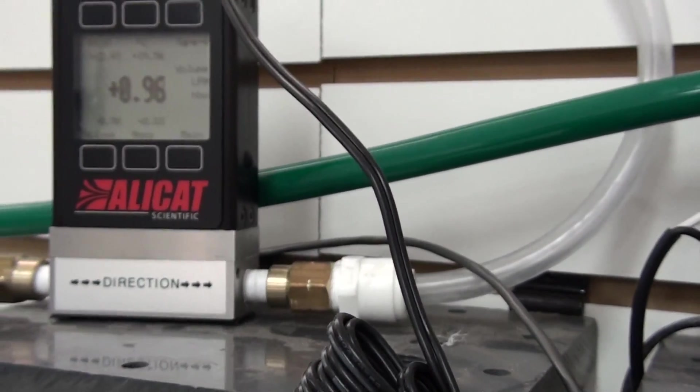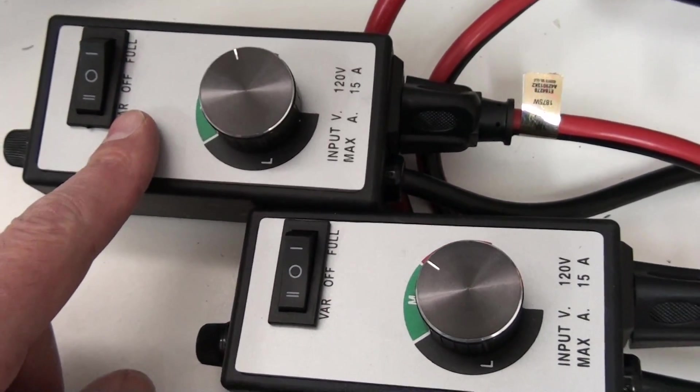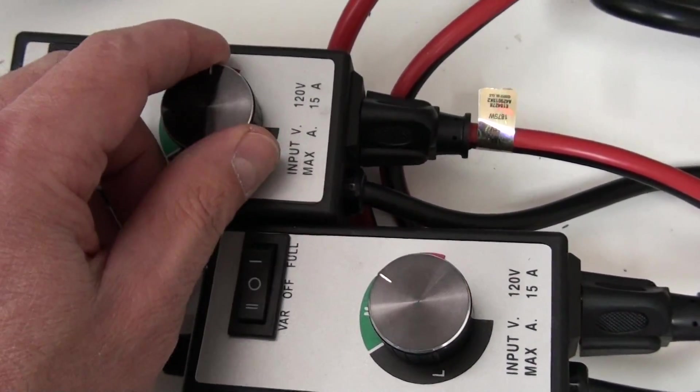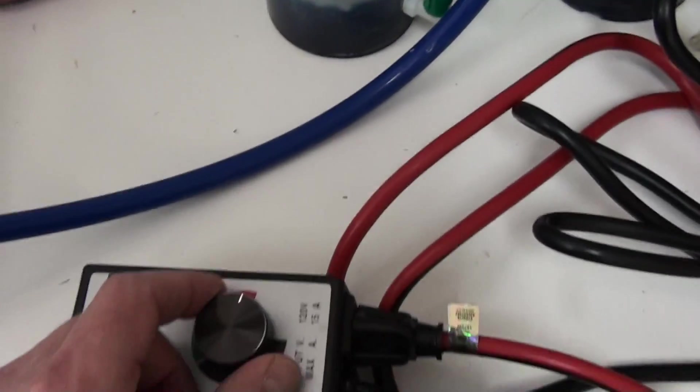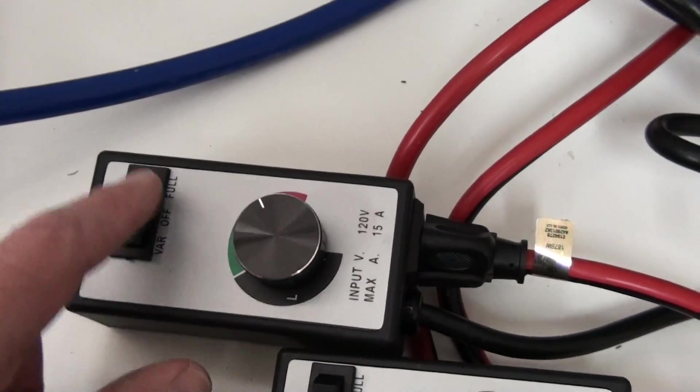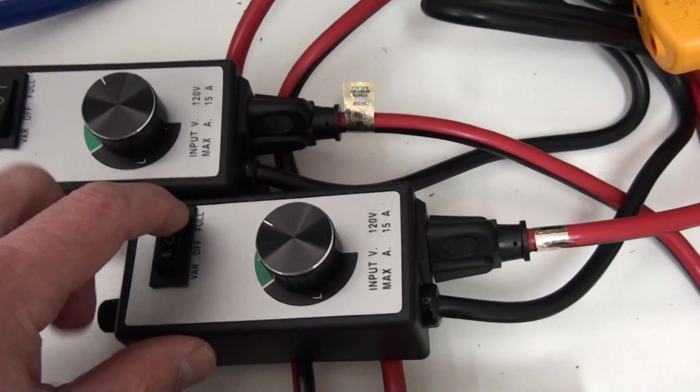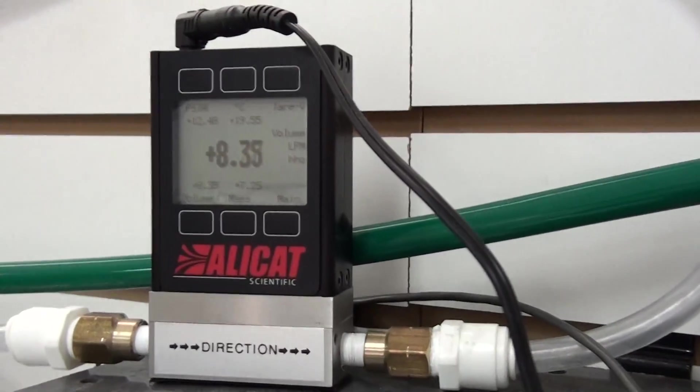So you can vary production right here on these controllers. Controllers have a variable setting, which is on right now, where you can vary your production. Or they have a full-on setting, where it bypasses the controller and goes full-on. Now we're full-on. See the liters per minute climb.